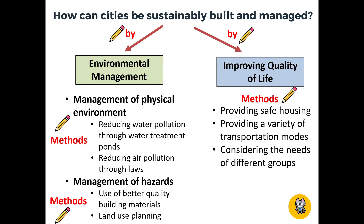I'll give you five seconds to look at this slide and make the annotations, then I'll move on. The reason I asked you to make these annotations is that for us to sustainably build and manage cities, there are two categories of strategies we can use: one is environmental management, and one is improving quality of life. In environmental management we have two subcategories: management of physical environment and management of hazards. In total, the environmental management category has four strategies and the improving quality of life category has three strategies.